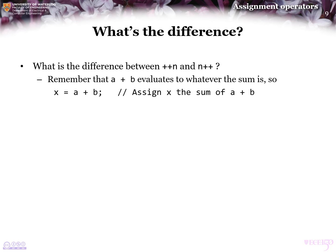So, if I assign x the value of a plus b, given a and b, that sum is calculated, and whatever that sum results in is assigned to the local variable x. Both plus plus n and n plus plus add 1 to n, but what does plus plus n and n plus plus evaluate to?